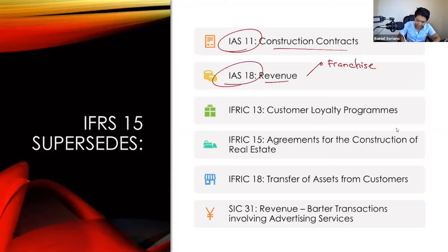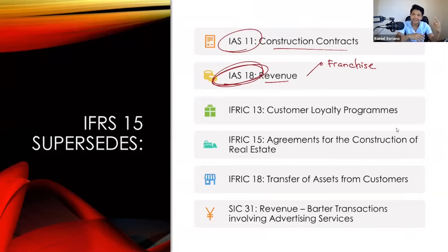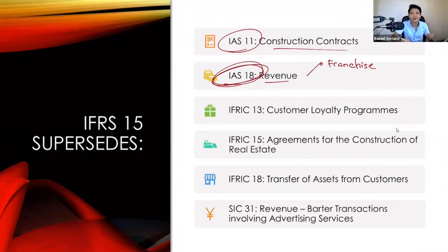Under IAS number 18, which is the standard we used previously, there were two requirements before we could recognize revenue: first, we expect future economic benefits to flow to the entity; and second, these benefits can be measured reliably. So as long as we expected to receive future economic benefits and these were measurable, revenue could already be recognized under the old standard.